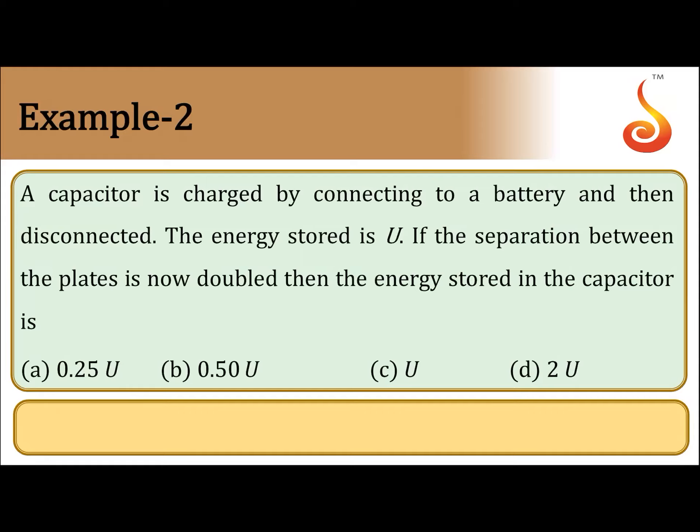A capacitor is charged by connecting to a battery and then disconnected. The energy stored is u. If the separation between the plates is now doubled, then the energy stored in the capacitor is: 0.25u, 0.50u, u, or 2u?